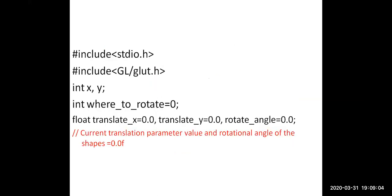For the implementation of this program, the required header files stdio.h and glut.h are included. Variables like x, y are used to read the coordinates of the fixed point. The variable 'where to rotate' is initialized with zero, translate_x and translate_y are initialized with zero, and rotate_angle is also initialized to zero.